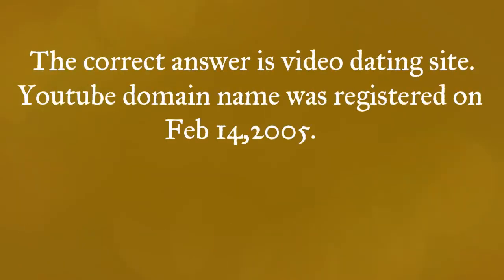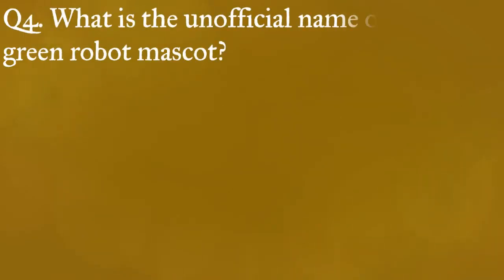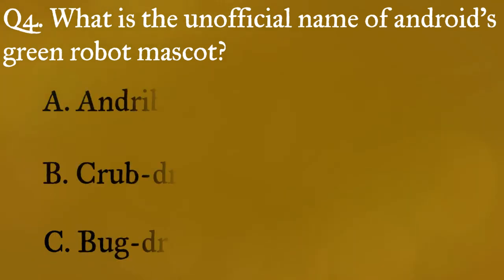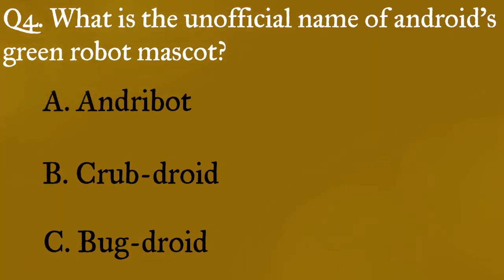The correct answer is video dating site. YouTube's domain name was registered on February 14, 2005. I bet you did not know that one! Question four: what is the unofficial name of Android's green robot mascot? A) Android Bot, B) Crab Droid, C) Bug Droid.